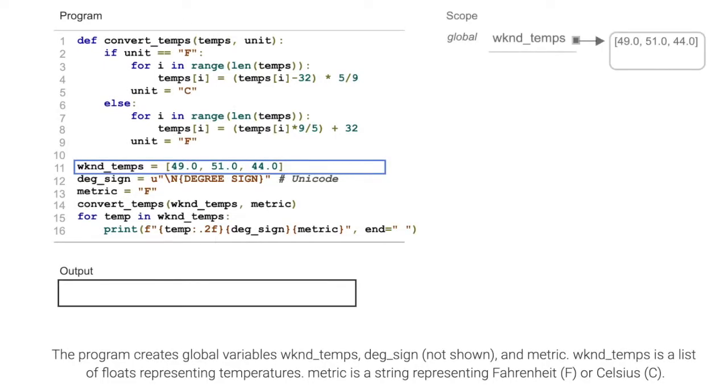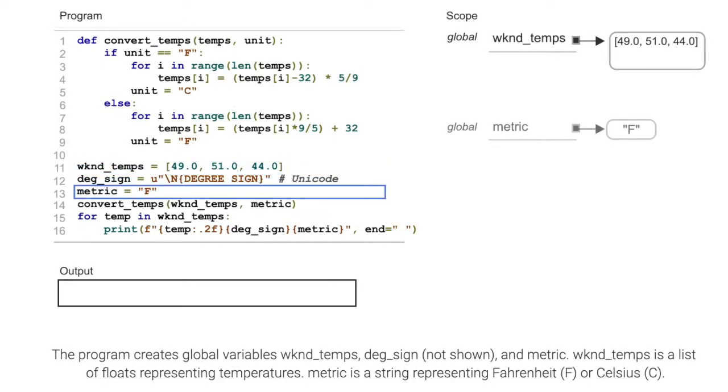The program creates global variables wknd_temps, deg_sign (not shown), and metric. Wknd_temps is a list of floats representing temperatures. Metric is a string representing Fahrenheit or Celsius.